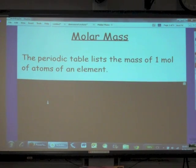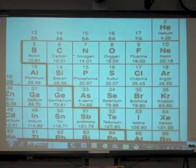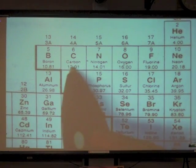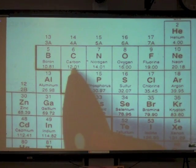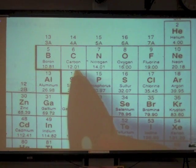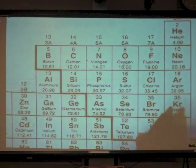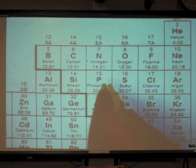The periodic table actually lists the mass of one mole of atoms of any particular element. So depending on the units that we decide to use, this atomic mass can represent two different things. If we're talking about the atomic mass of a typical carbon atom, we would say that the atomic mass of a typical carbon atom is 12.01 amu.